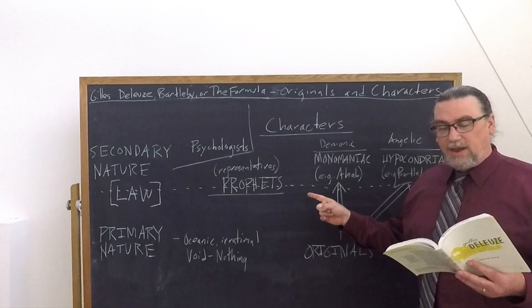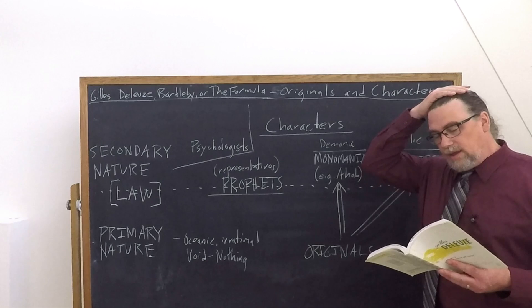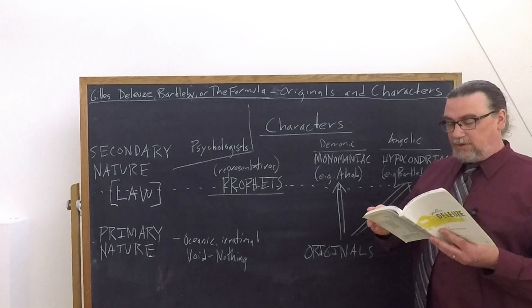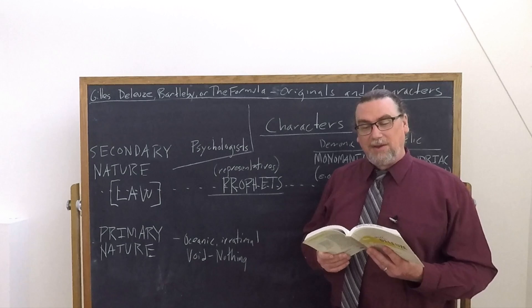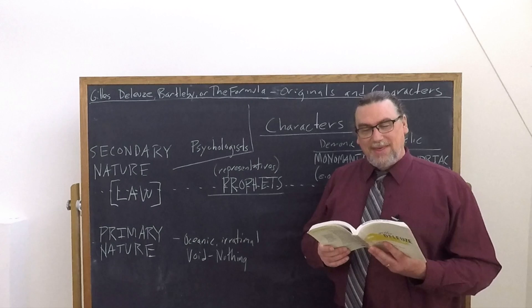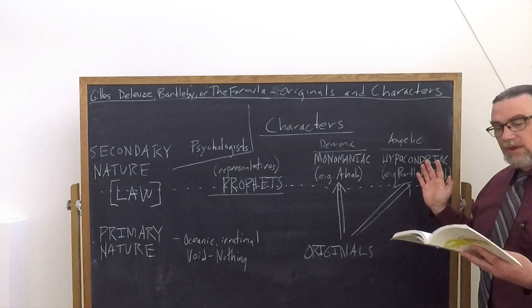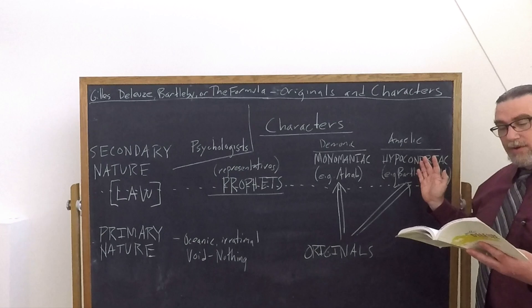And so he goes on and he says that torn between these two natures with all of those contradictions, these characters are extremely important, but these prophets do not have the status of the two others. They're witnesses, narrators, interpreters. And he goes on and he says, this is where we get to the originals versus characters. And he's going to tell us after invoking the underground man, as well as Kafka and Musil that with these two types of characters, the monomaniacs and the hypochondriacs, we go beyond characters.